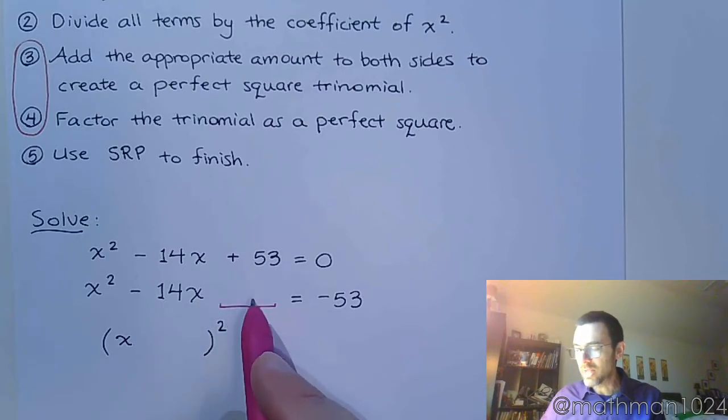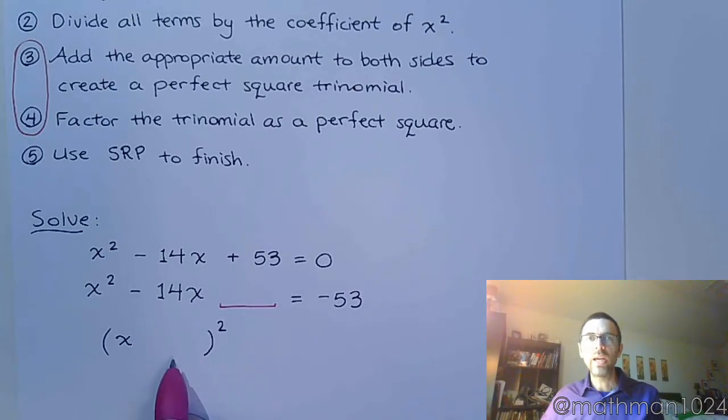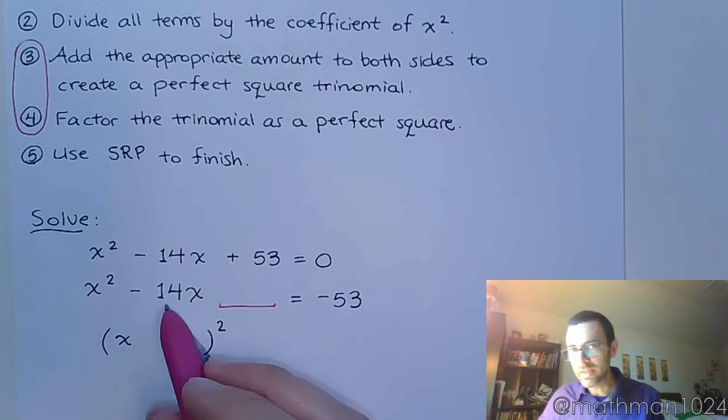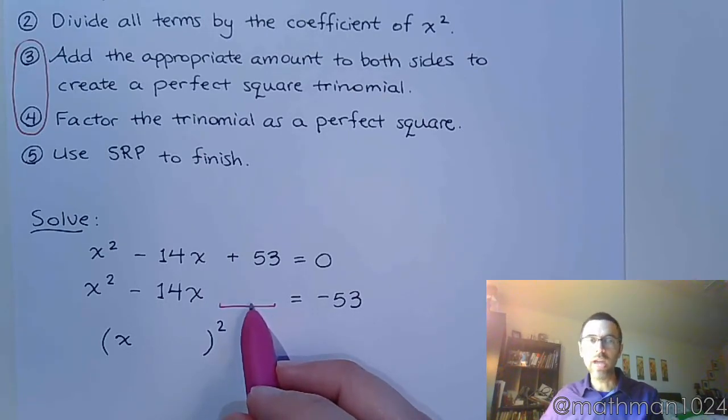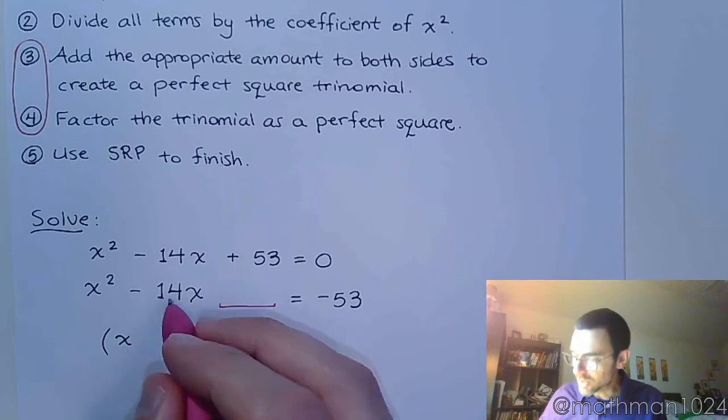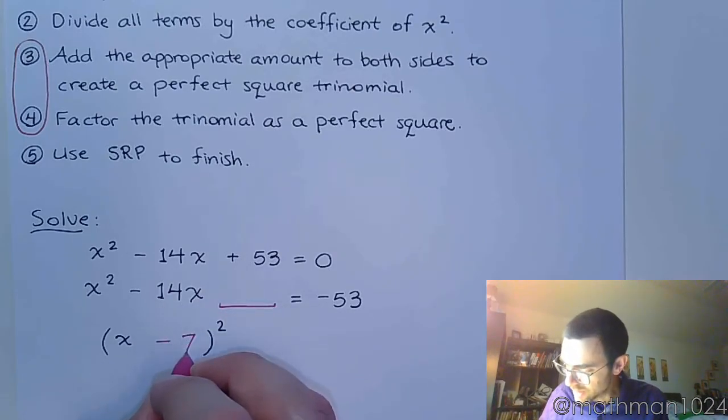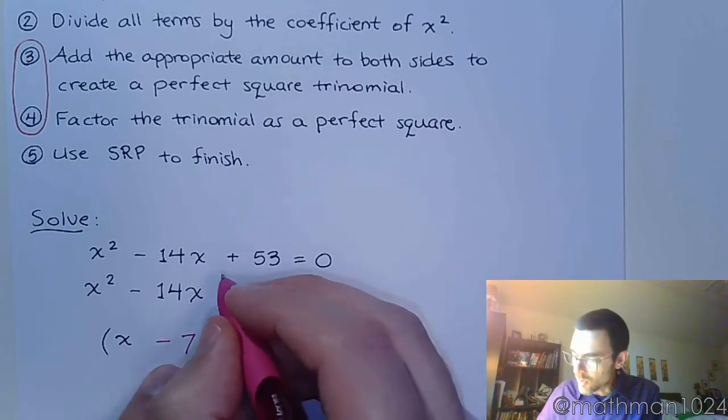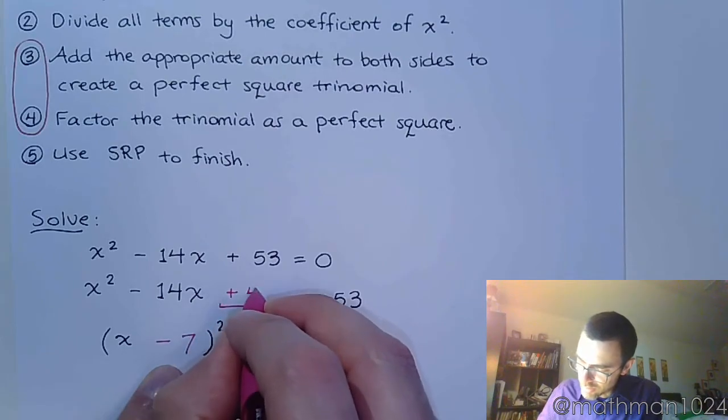Because in order to find what goes here, you're going to be finding the number that goes here. And it's a simple pattern of divide this by 2 to get the number here. And then square that number to find what goes in the gap. So, divide this by 2, we get negative 7. And negative 7 squared is positive 49.